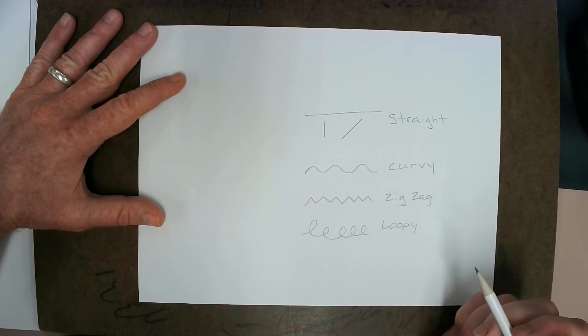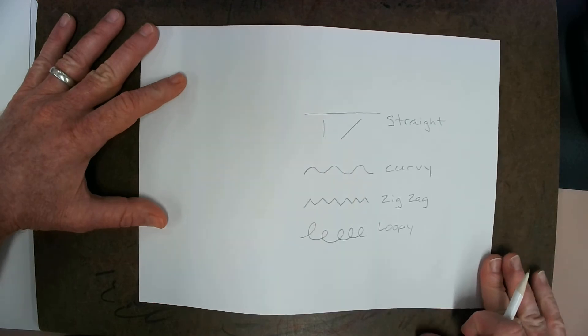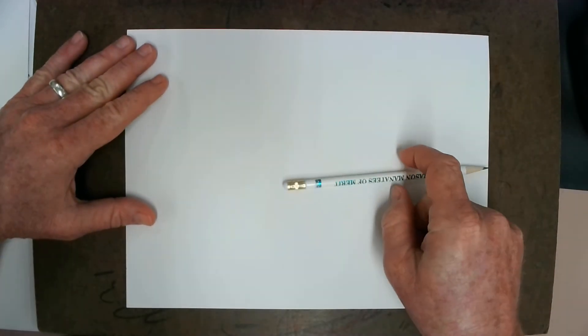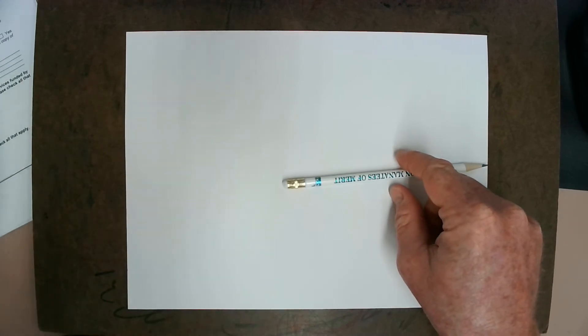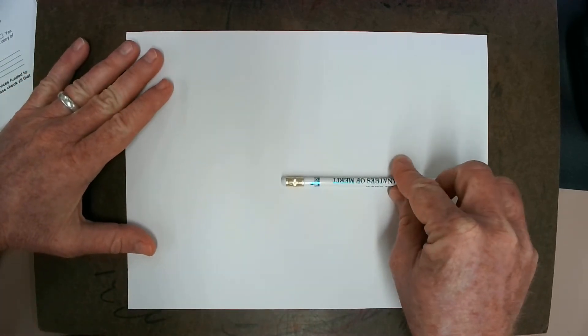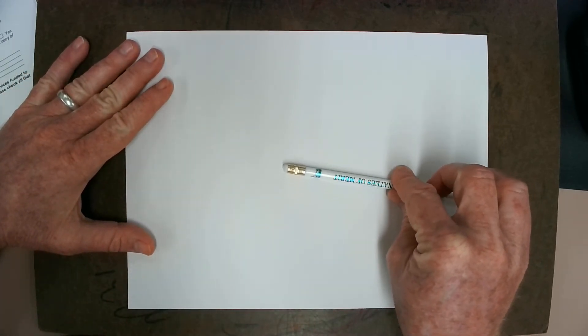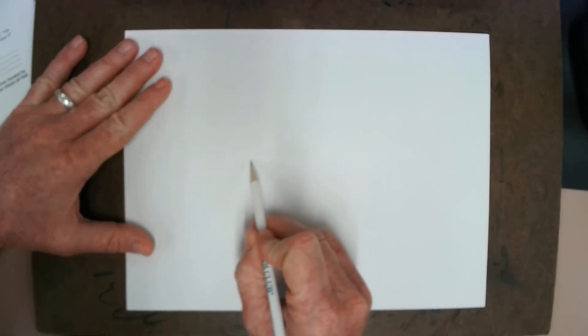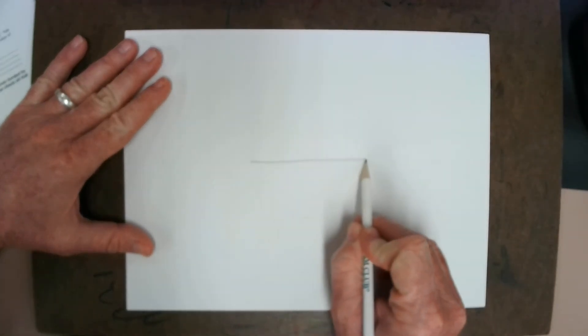Now, we are going to use all four line types to draw a picture. I'm going to turn my paper over, and we are going to draw a silly alien creature on our paper. Now, I'm going to start with a straight line right in the middle of the page that goes all the way across.